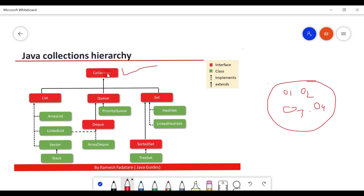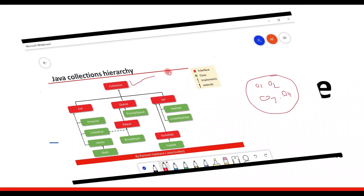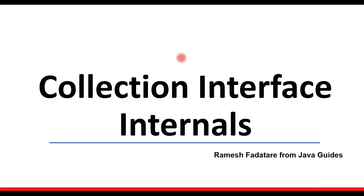For example, the collection interface has all the common methods applicable to List, Queue, Set, Deque, SortedSet, and their implementations. We'll deep dive into the collection interface — exploring which package it is in, which jar file it belongs to, all its methods, and the new methods added in Java 8.